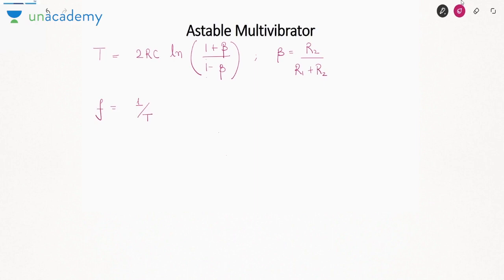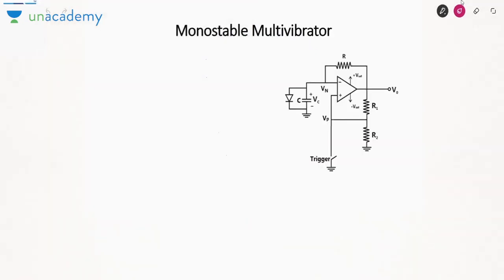The third category is the monostable multivibrator, also called a mono-shot or one-shot multivibrator. It has one stable state: it goes from unstable to stable on its own, but goes from stable to unstable only when an input is applied.